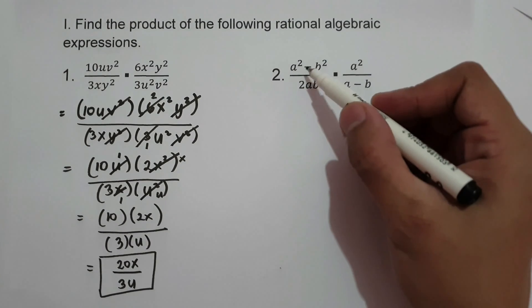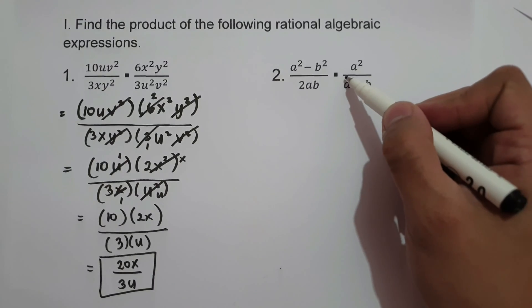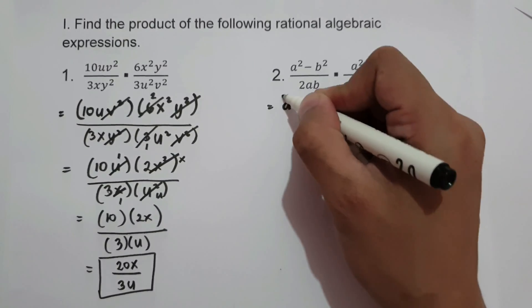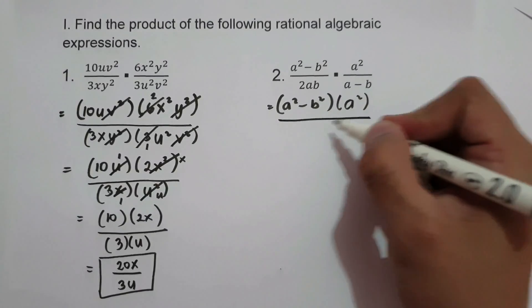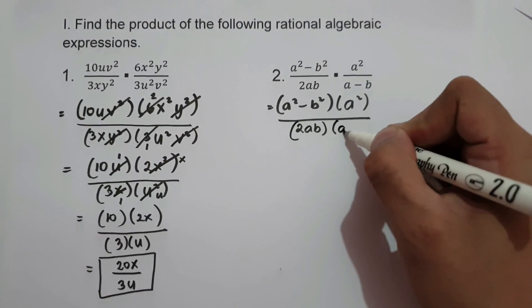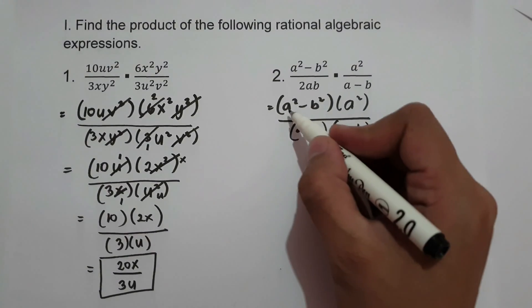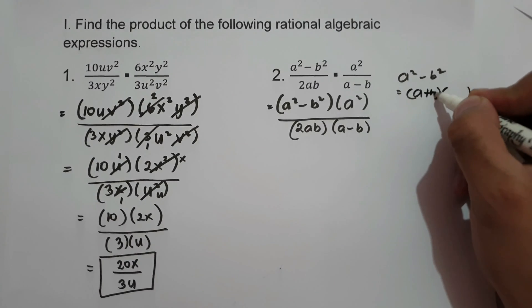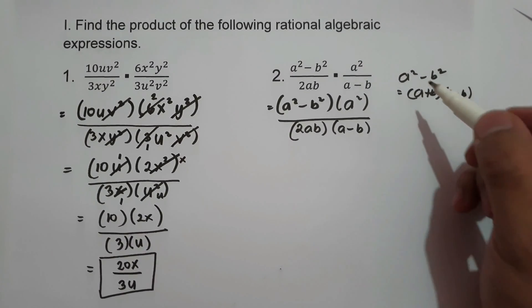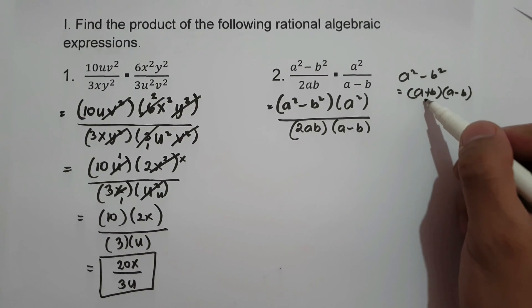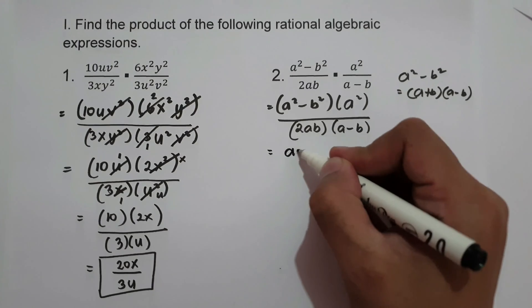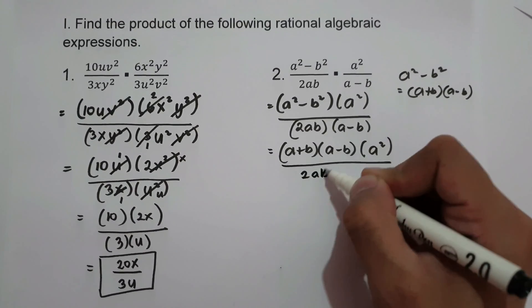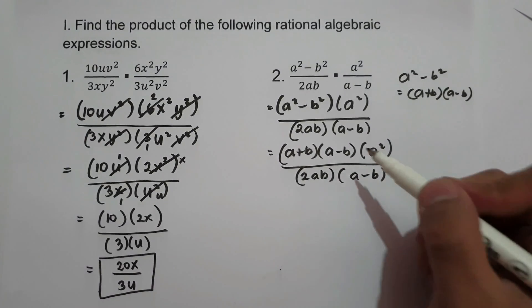For number 2, we have (a² − b²)/2ab times a²/(a − b). We write this as (a² − b²) times a² over 2ab times (a − b). Now, a² − b² can be factored as (a + b)(a − b) because those are the factors of a difference of squares. So we have (a + b)(a − b) times a² over 2ab times (a − b).